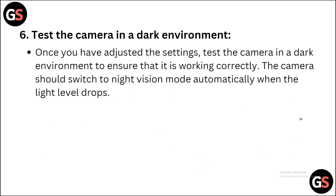Step 6: Test the camera in a dark environment. Once you have adjusted the settings, test the camera in a dark environment to ensure that it is working correctly. The camera should switch to night vision mode automatically when the light levels drop.